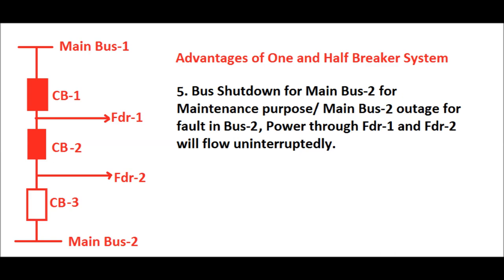From an operational point of view, the one and half breaker system offers greater flexibility — the switching operations of feeder 1 and feeder 2 are more flexible via main bus 1 and main bus 2. However, since three circuit breakers are used for two feeders, this system is more costly. Additionally, there is complexity in the protection system associated with the one and half breaker configuration.